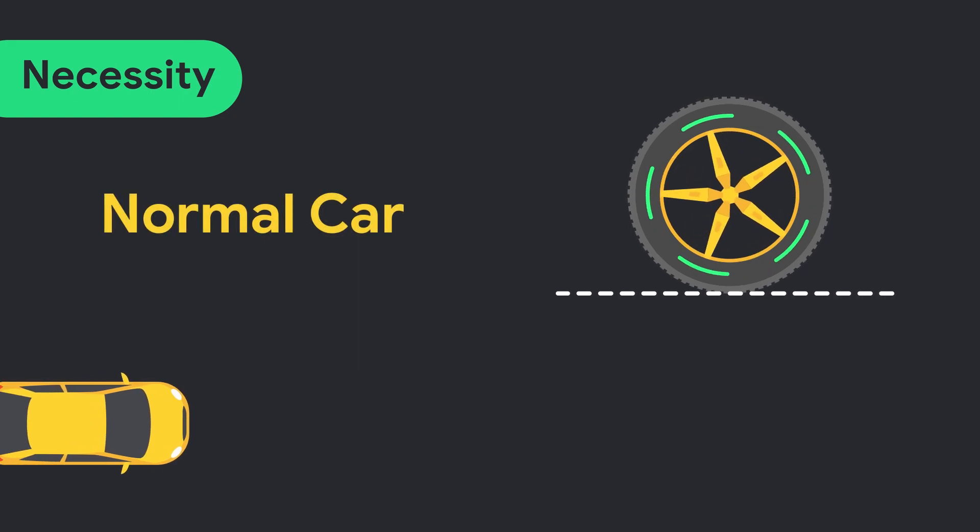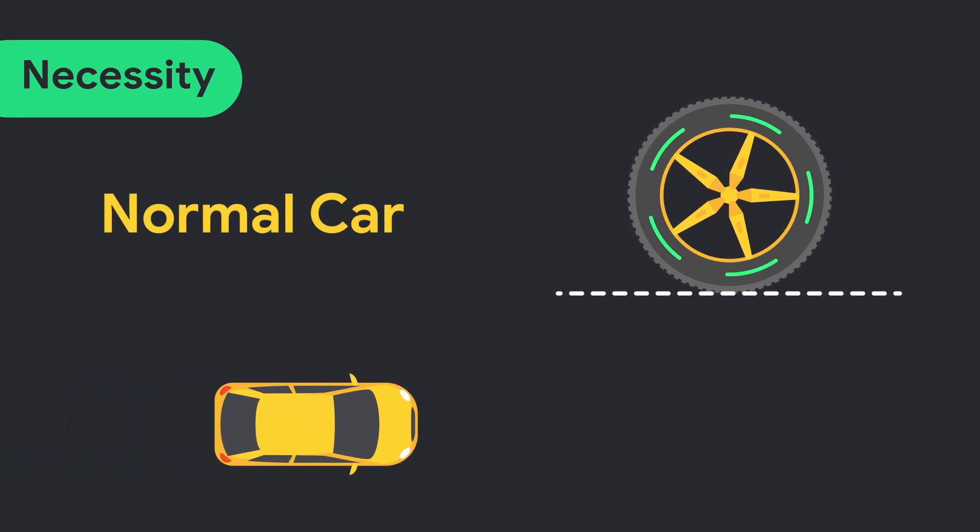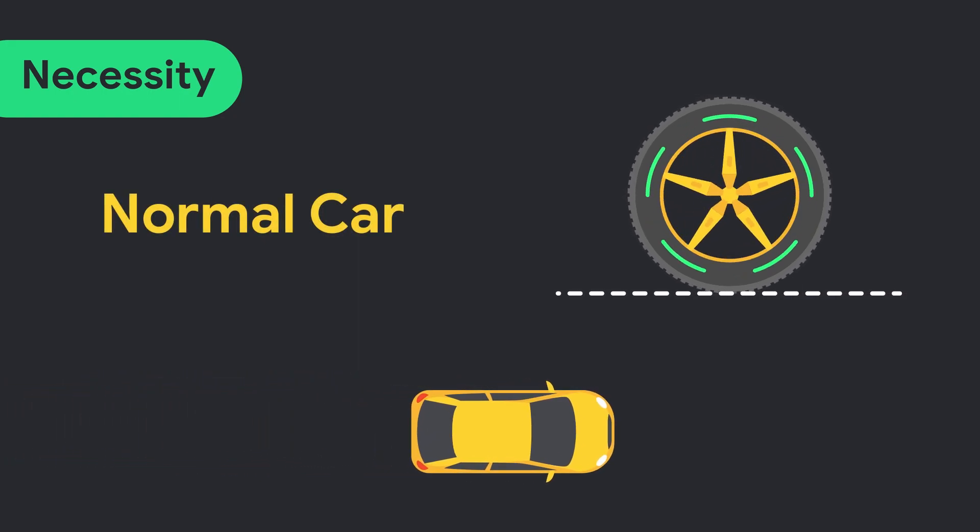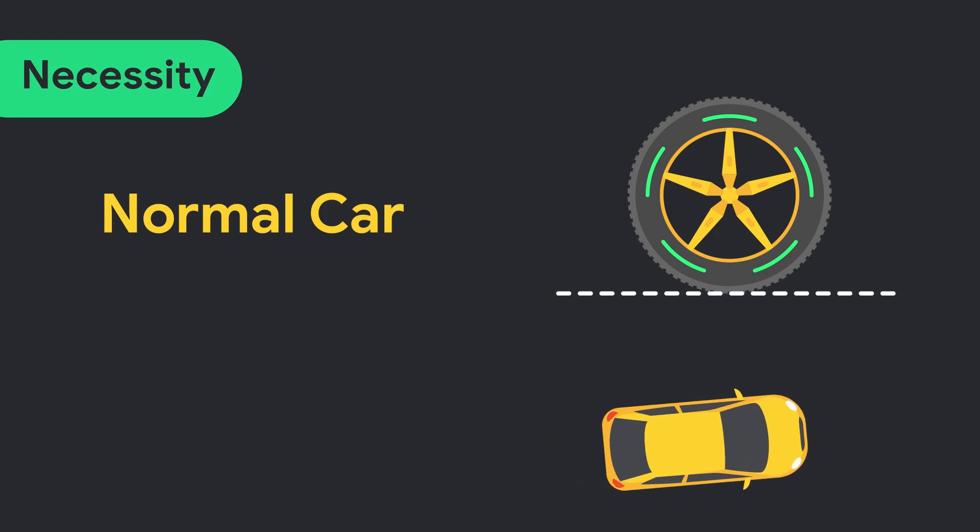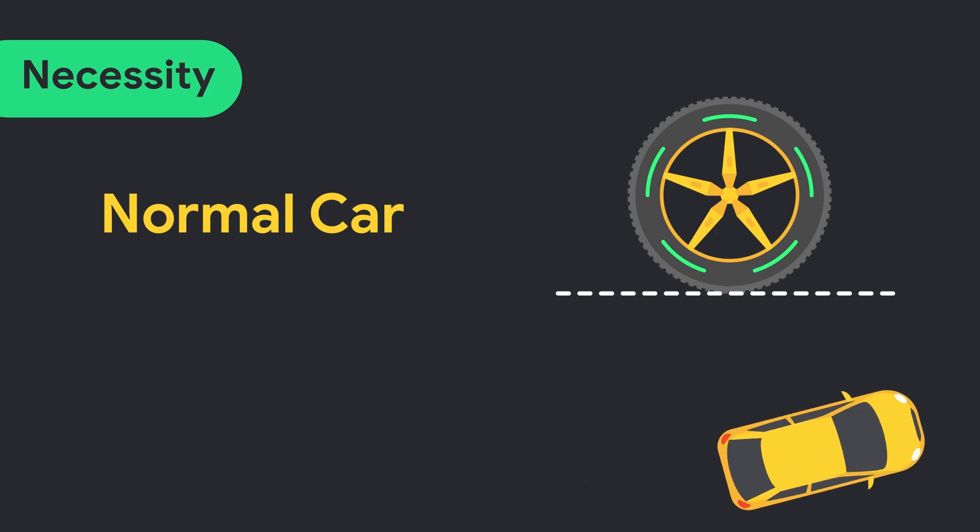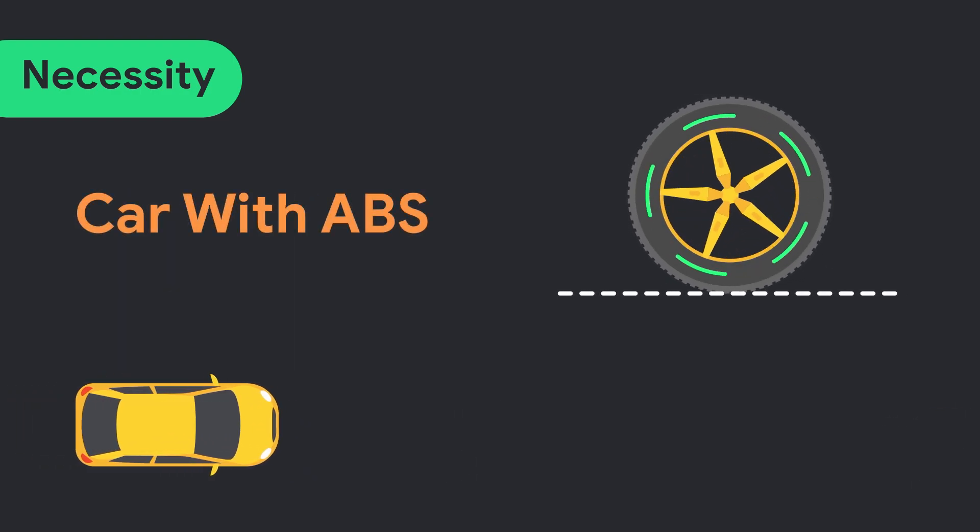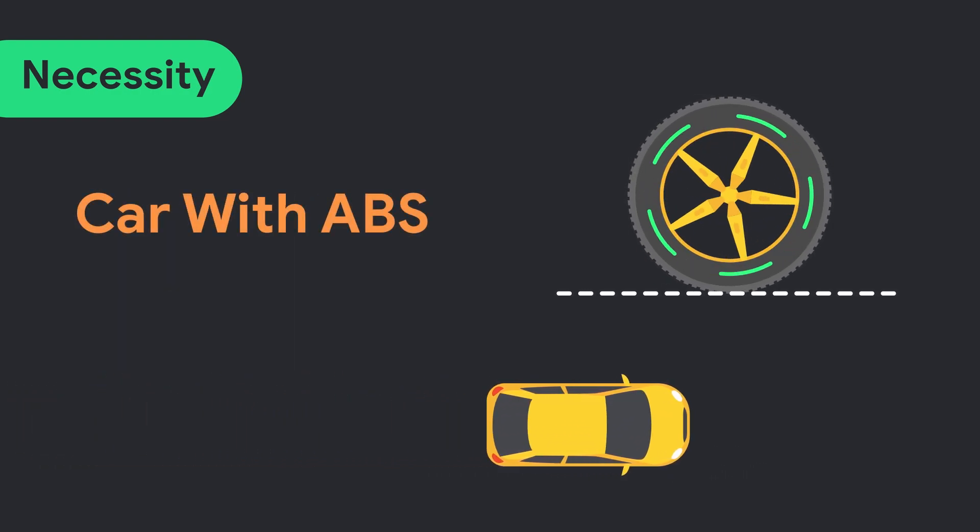When a driver suddenly applies the brake, the braking system locks the wheels of the vehicle. This causes wheel skid, which results in poor handling. ABS prevents the locking of wheels, which eliminates wheel skidding and thus driver handling can be maximized.